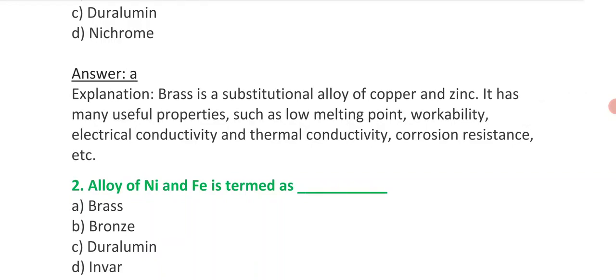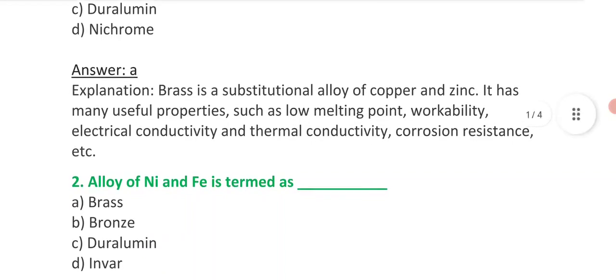Second question is: alloy of nickel and ferrous, it's termed as - option A brass, option B bronze, option C duralumin, option D invar.